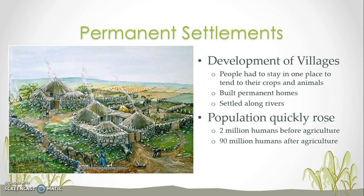This stability of food led to the development of villages. People had to stay in one place in order to tend to their crops and take care of their animals, so they could no longer be nomadic. They began to build permanent settlements, and they settled along rivers because rivers provided water and also very fertile soil for them to grow their crops.